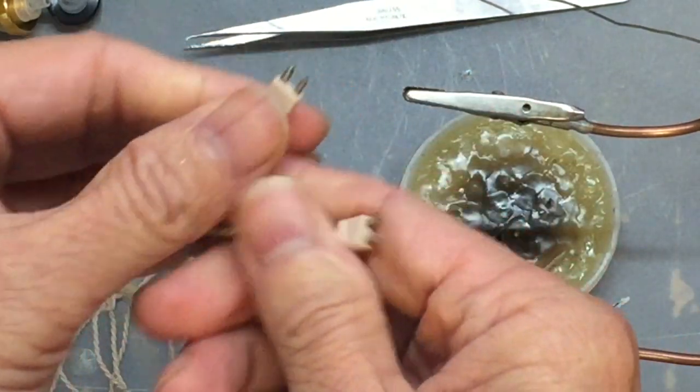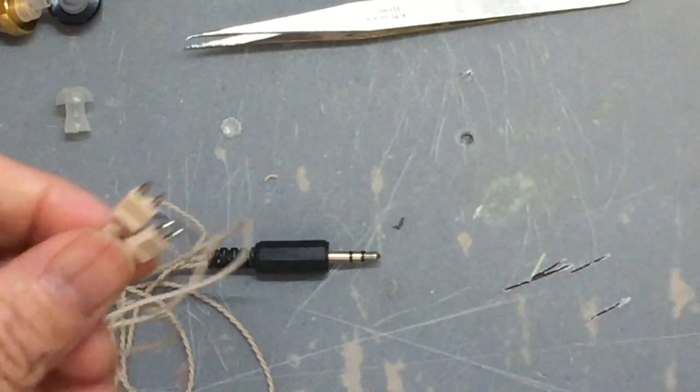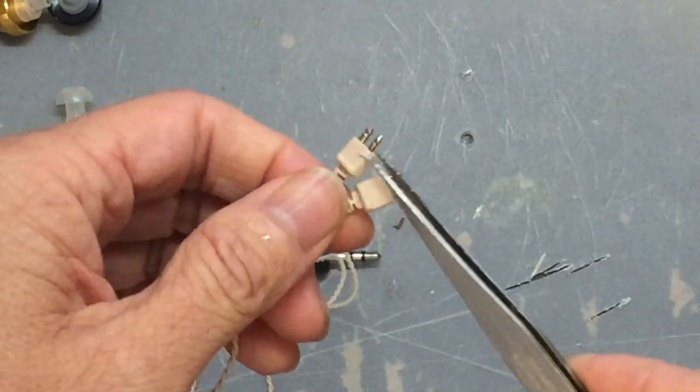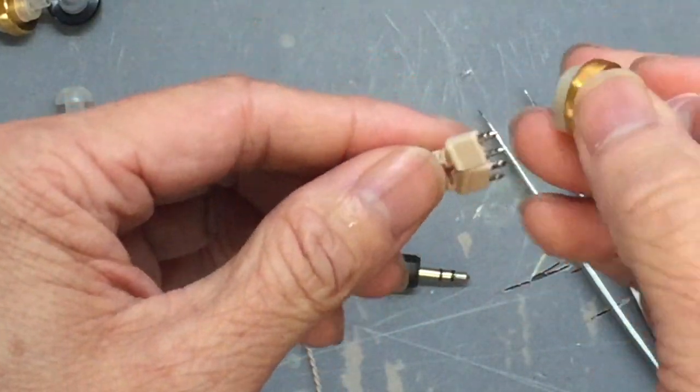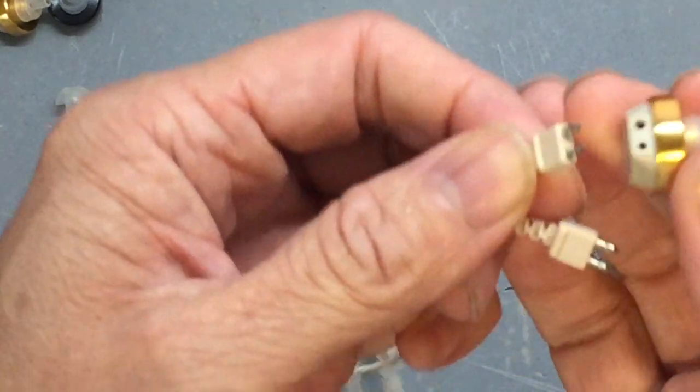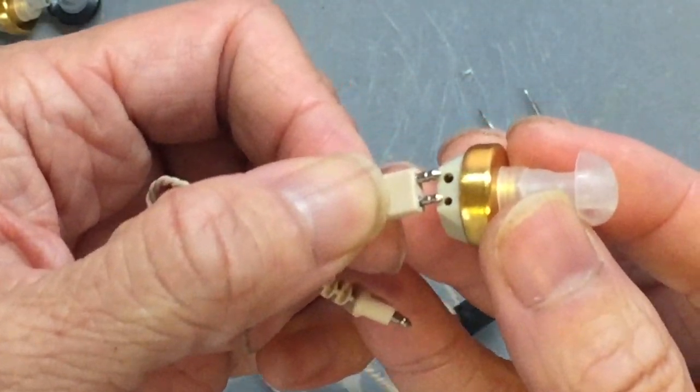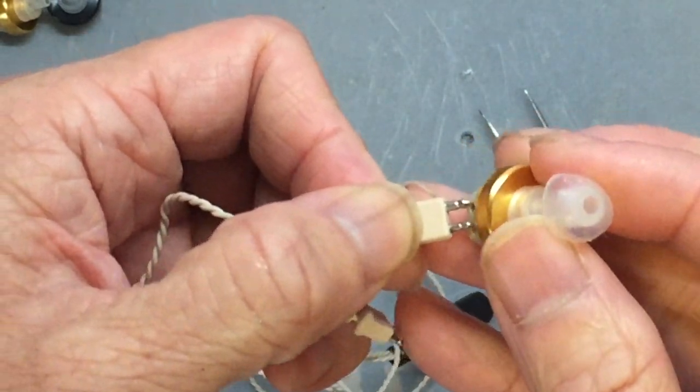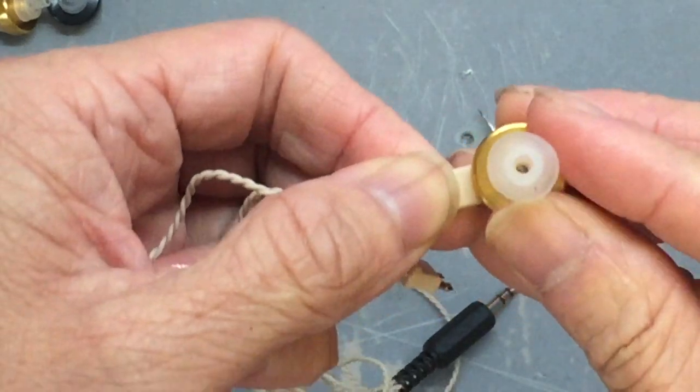So we need to plug in the hearing aid earbud to the end of the connector. Make sure you fit the right size because the two pins have different sizes: a big one on the top and a small one at the bottom. Make sure you plug in the right hole, otherwise it may damage the hearing aid earbud.